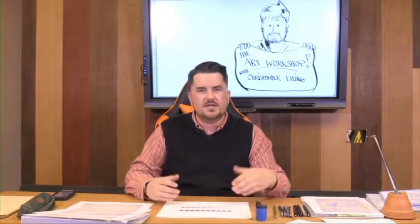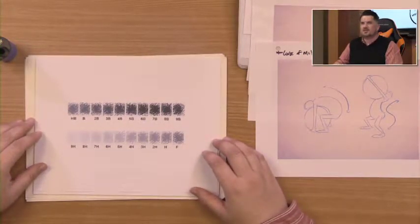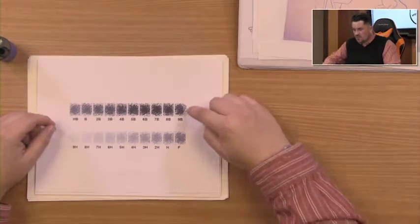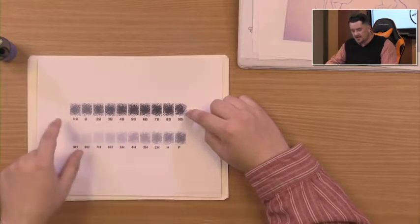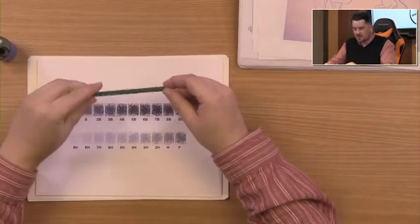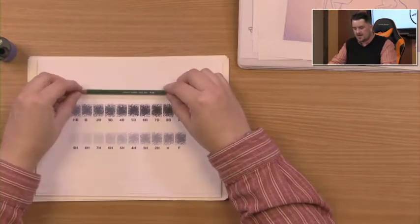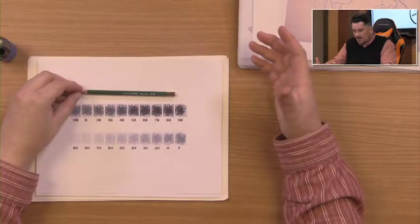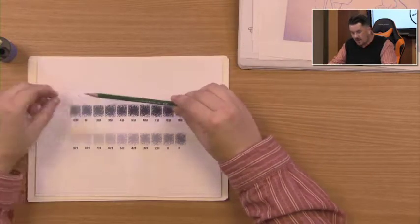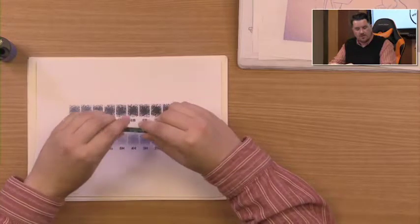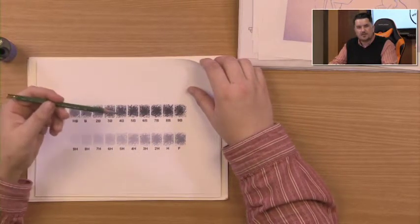Pencil scales vary from H all the way to B — that's a scale system. The scale runs from 9B, 8B, 7B, 6B, all the way down to B, then HB, F, and then H up to 9. This particular pencil here is a 6H, so it falls into the harder range. You could buy pencils in sets that run the whole gamut from 9B all the way to 9H, giving you every variation of graphite intensity. With different shades — not colors — you can get different shades out of your pencils using this scale system.